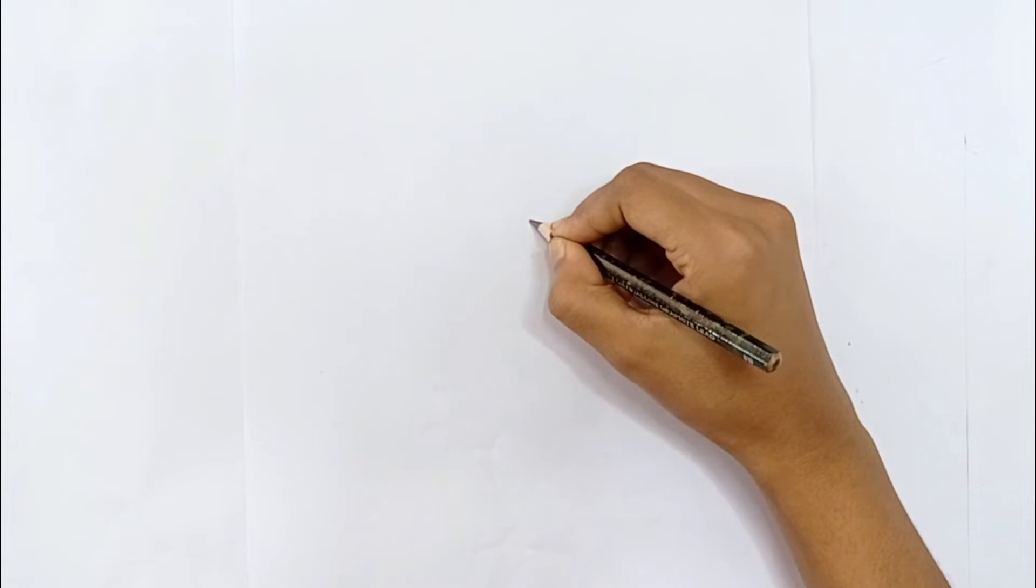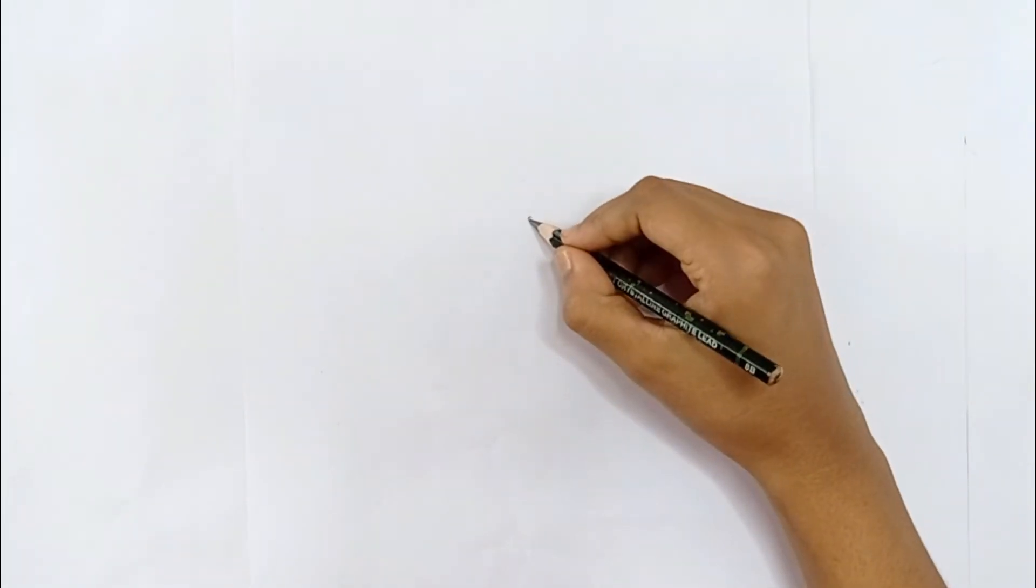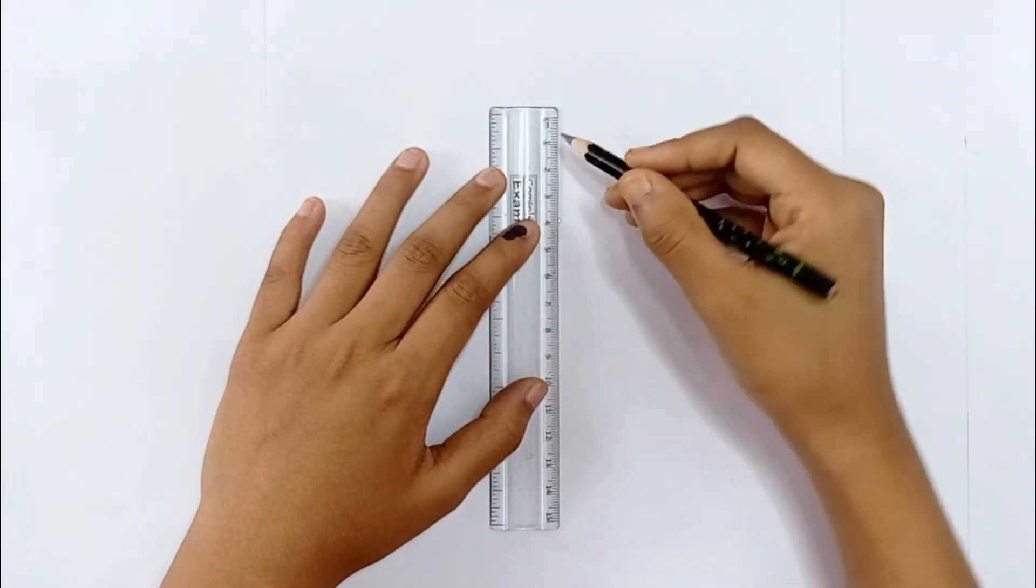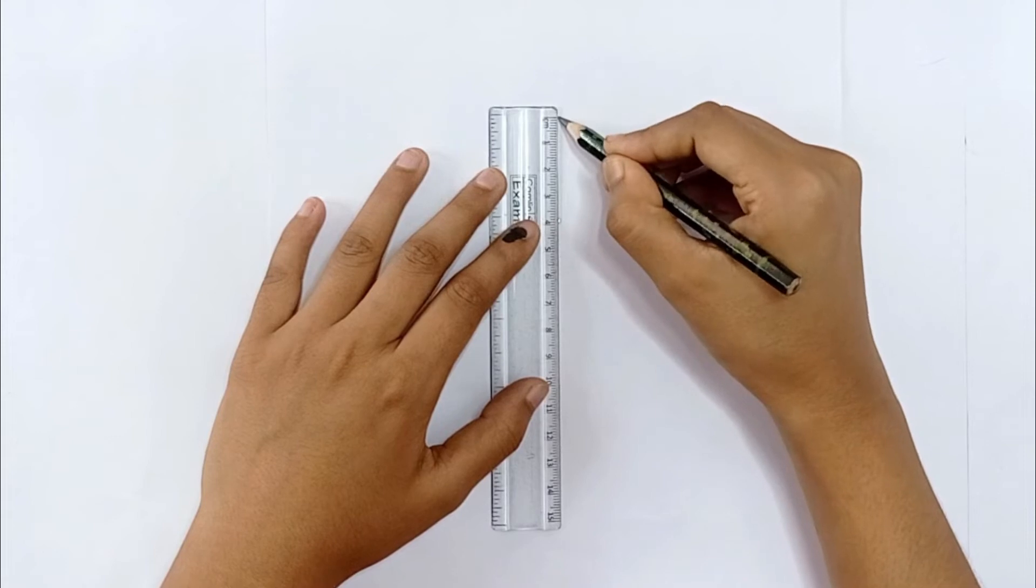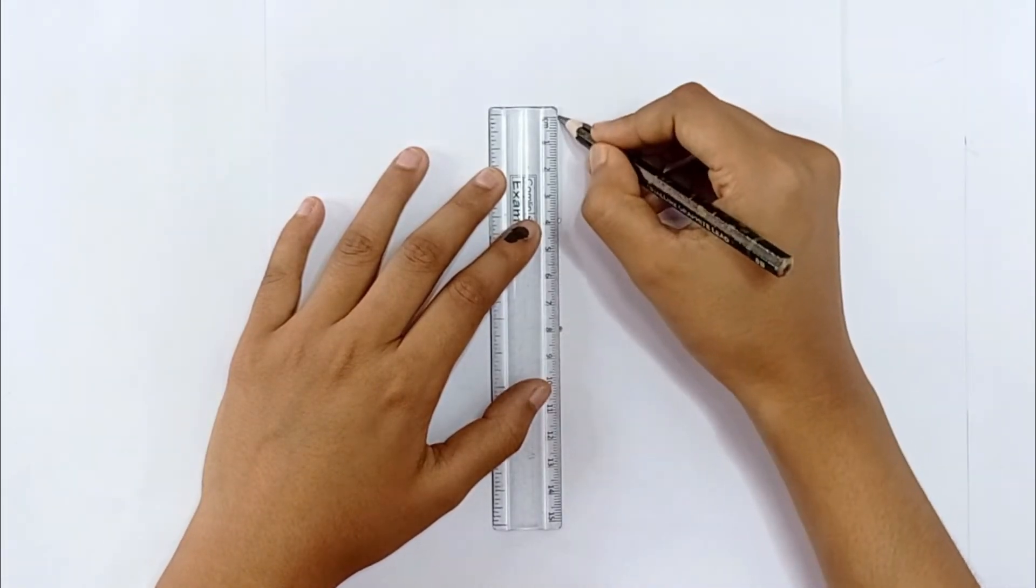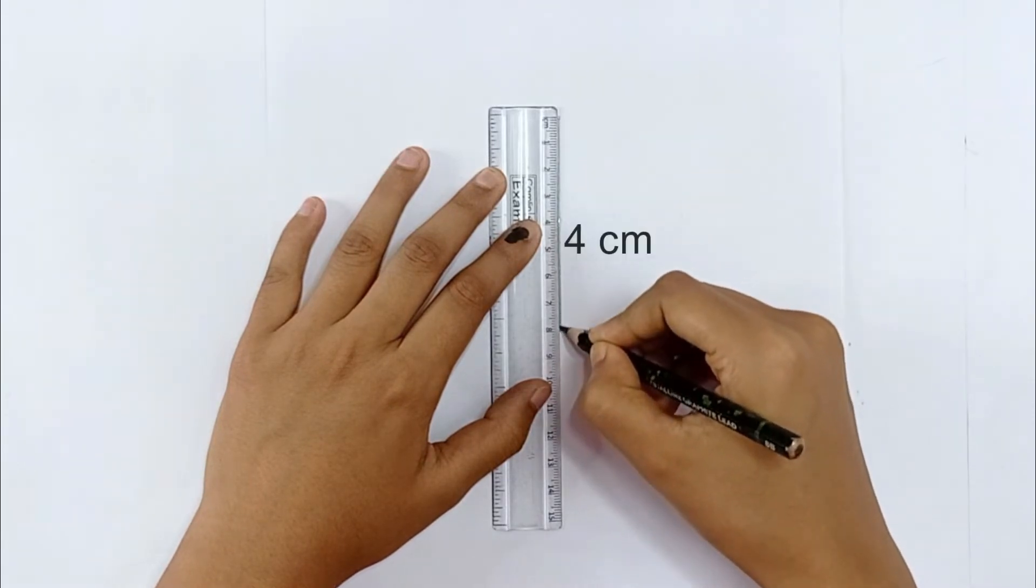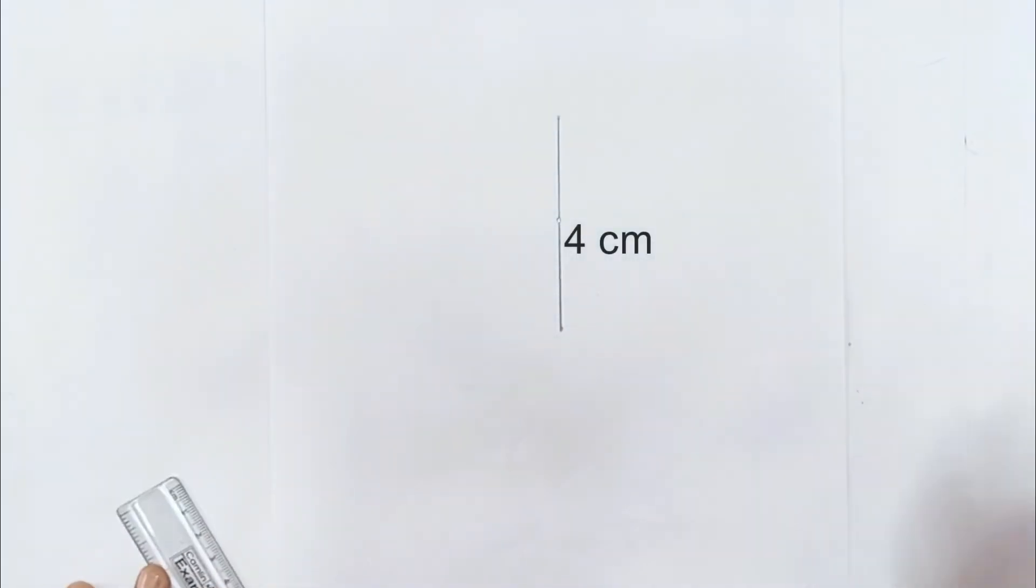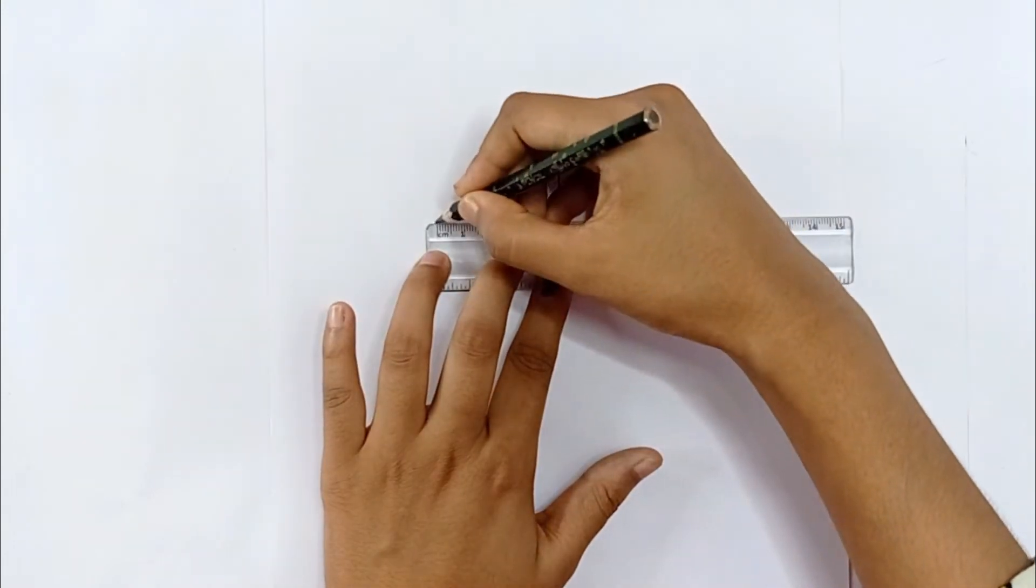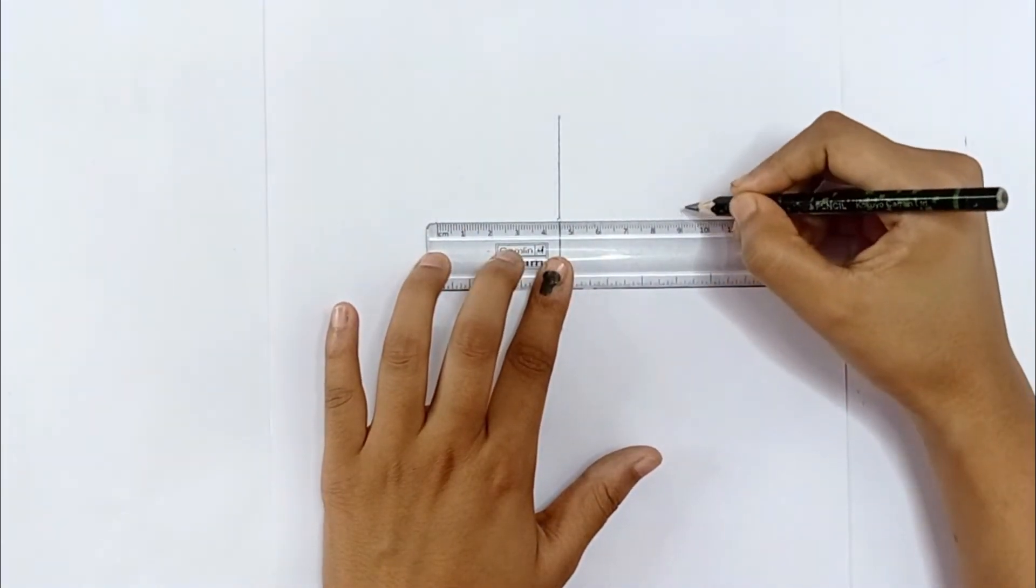First we will draw a point here, this is the midpoint of the sunflower. I will draw two lines of 4 centimeter length at the top and bottom of this midpoint. Then I will draw two lines 4.5 centimeters long to the right and left of the midpoint.